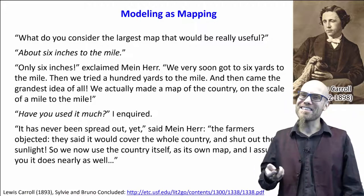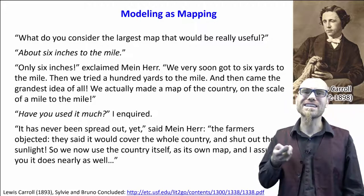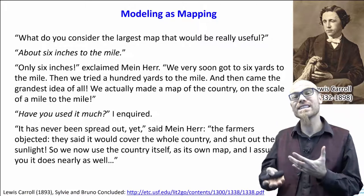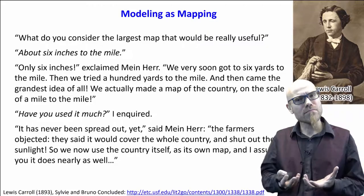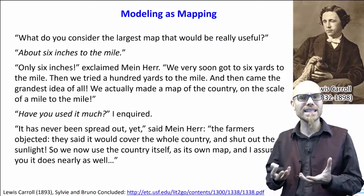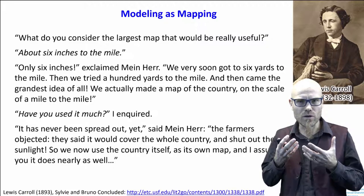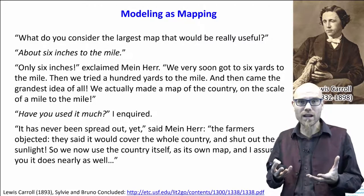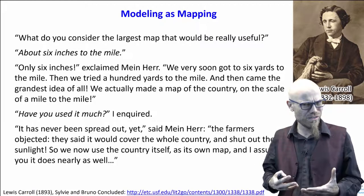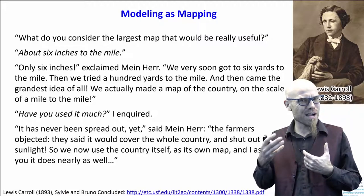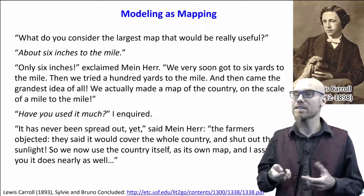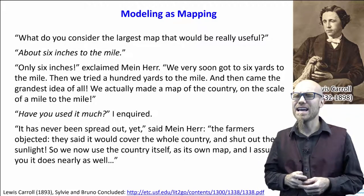'So we now use the country itself as its own map.' Of course, the irony is that if you use the country yourself, you don't need a map. A map is a representation — it's an abstraction, an idealized representation of reality. And modeling is mapping. You cannot keep all the details because the only real working model of the universe is the universe. It's highly inconvenient to have a universe on your desk, so you have to abstract it. You have to lose some details. And that's what modeling is about — an extremely creative process.